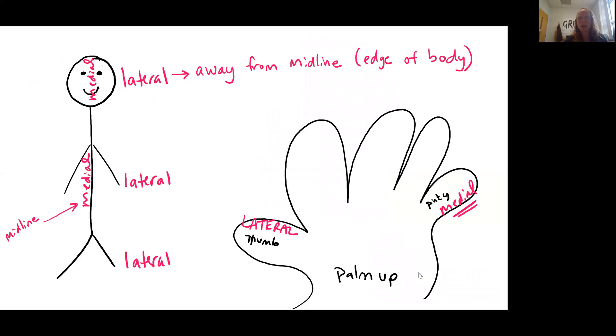Next we're looking at the terms medial and lateral. The term medial is referencing the midline of the body. So think about your nose, your sternum, your belly button. These are all medial. And then lateral is going to be away from the midline. So this is the edge of the body.